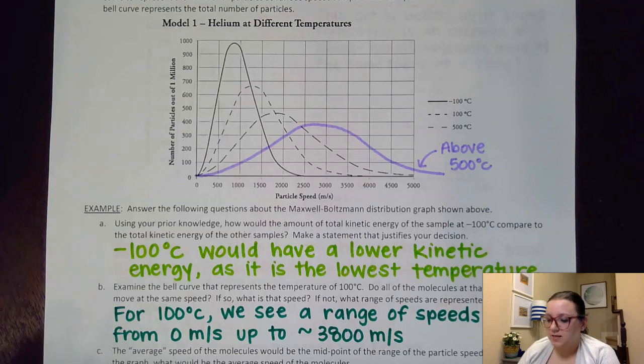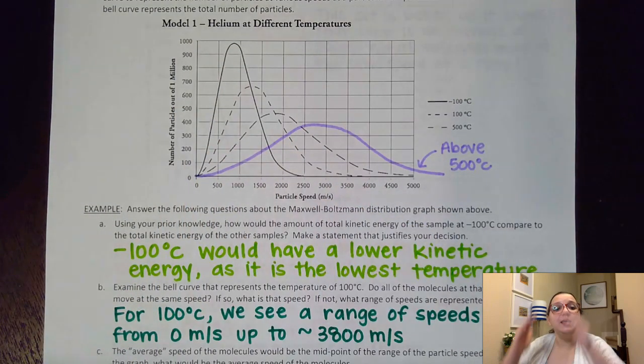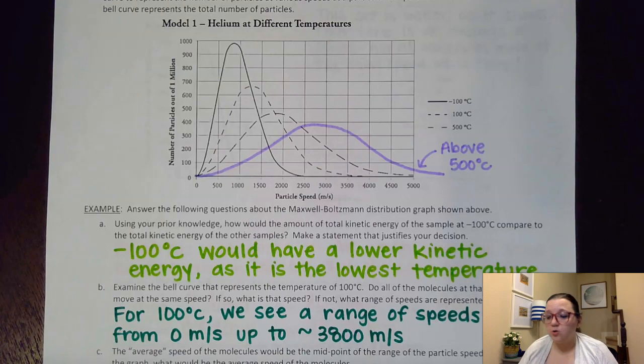The idea is that on all three of these curves the area underneath the curves is the same. That the total number of particles at all three of these temperatures is equivalent but the way those particles are distributed as far as the particle speed is different depending on the temperature.